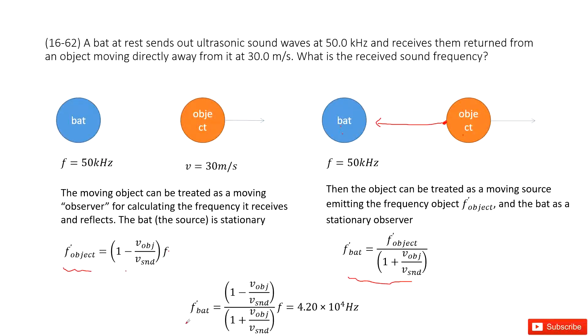We get the function looking like this one. You can see, so f_bat frequency, this is the frequency the bat received, equals to this function. Inside this function you can see f is given.